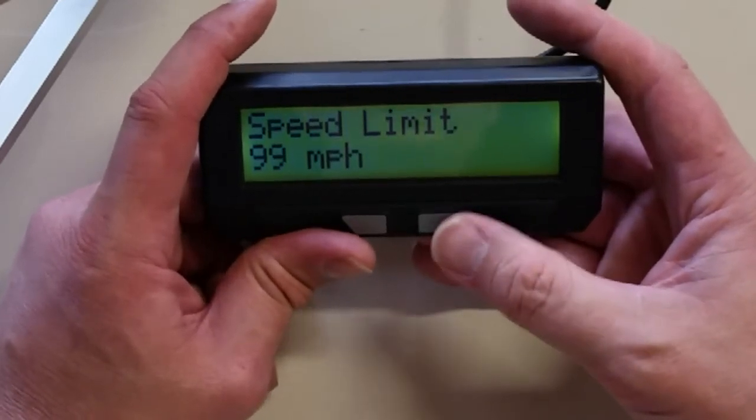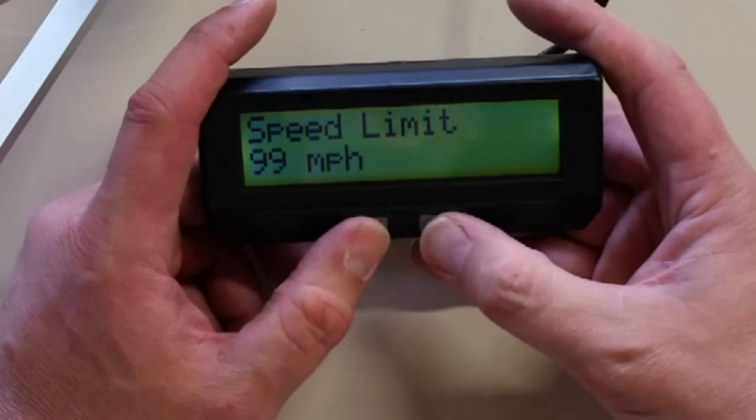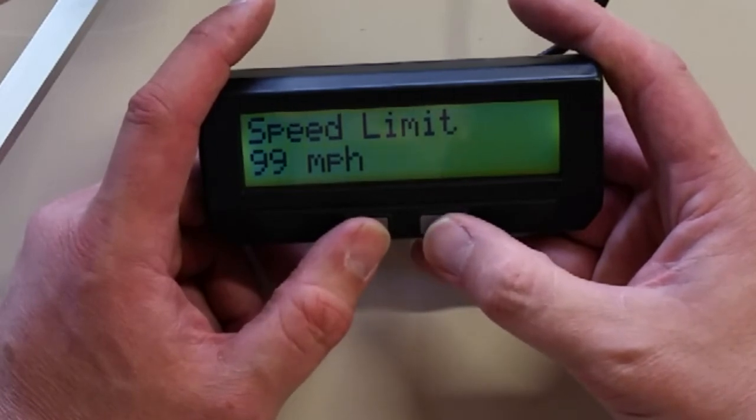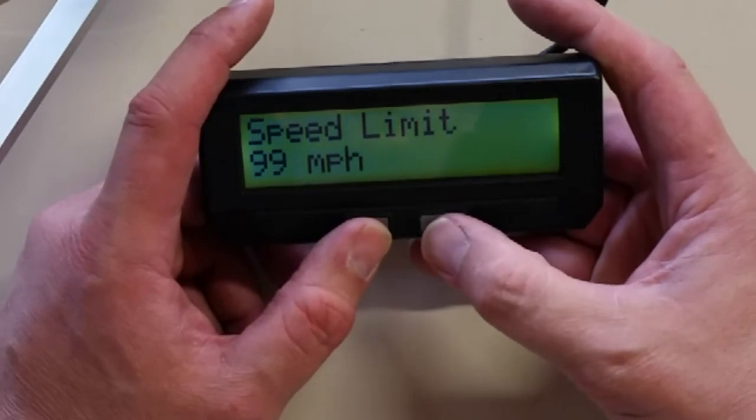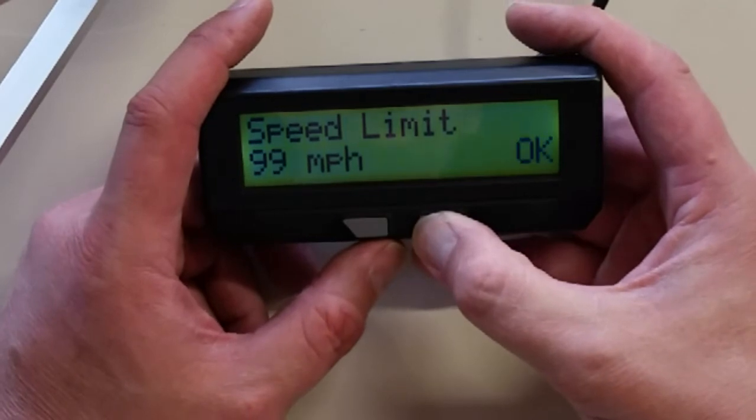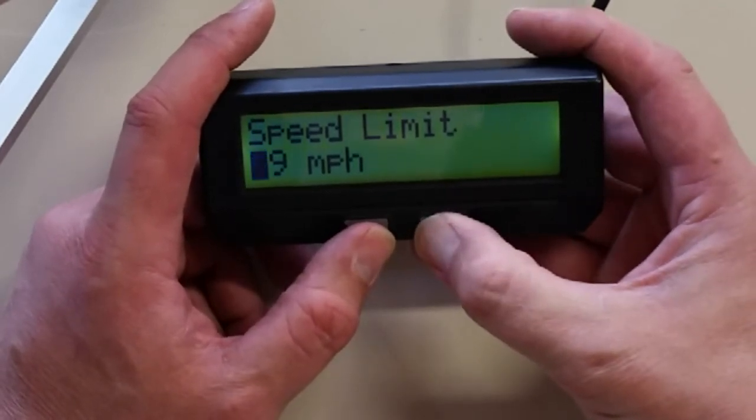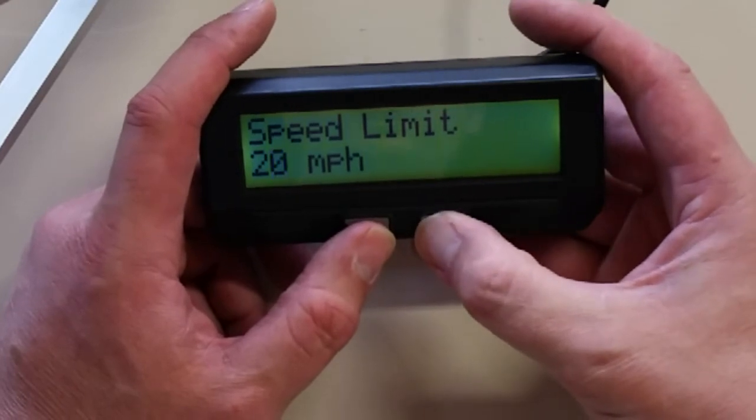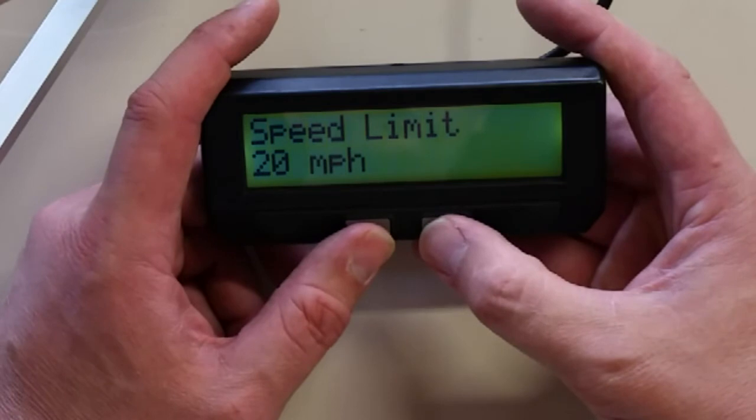Speed limit. You can leave that set to 99 if you don't want the cycle analyst to do any limiting. Or you can set it to let's say you want to be legal and you don't want to exceed 20 miles per hour. We can go ahead and change that. So press and hold. And we will set that to 20. So that we are fully legal for Europe. 20 miles per hour speed limit.